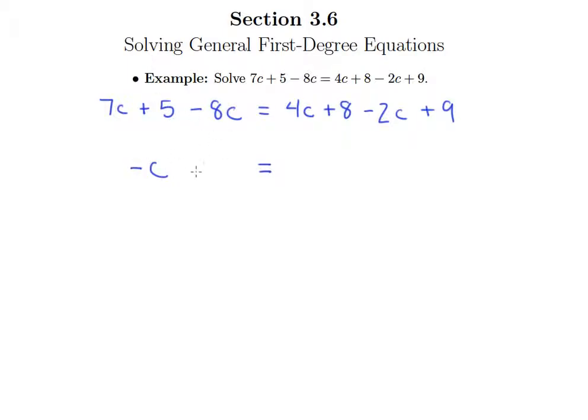And then the 5 doesn't have any like terms on the left, so I'll just put plus 5. And then over here, 4c minus 2c is 2c, and then 8 plus 9 is 17. And so now this problem, after I've done that first step of simplifying, looks like some of the problems we saw in the last video.